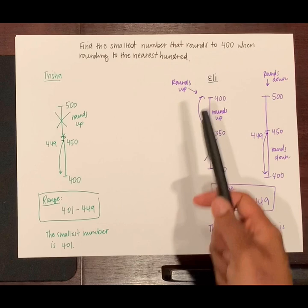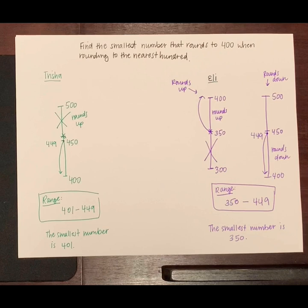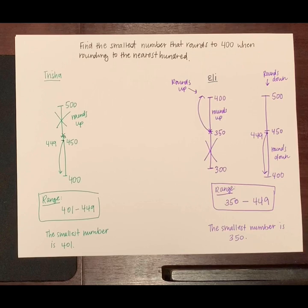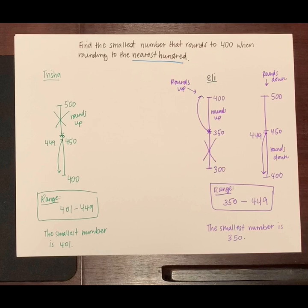Take a look at Trisha's work and Eli's work and think to yourself, whose work do you agree with? Who accurately identified the smallest number that rounds to 400 when rounding to the nearest hundred? Take 30 seconds to think for yourself.